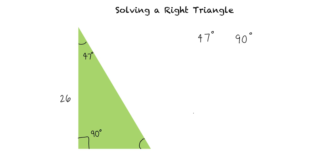Using our knowledge that the angle measures of a triangle must equal 180 degrees, we can solve for the remaining angle. This angle equals 43 degrees.